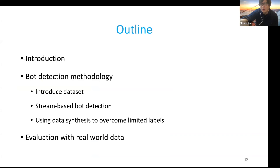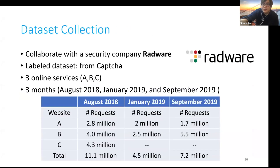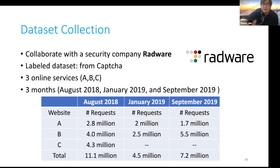In the next part of the talk, I will discuss our bot detection methodology and how we evaluate our system using real-world data. First, we want to get ground-truth data on bots. Thanks to our collaborators at Redware, we got such data. The data is labeled mainly from CAPTCHAs, and comes from three different websites — A, B, and C — covering three months of data over a year. This is a large dataset: in total, we got 23 million network requests.